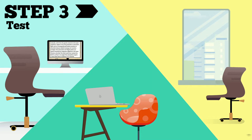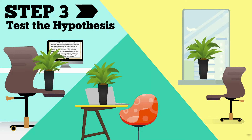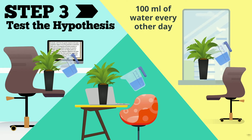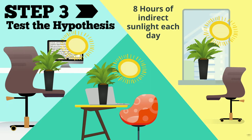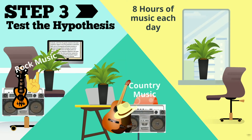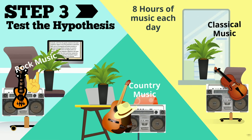Step three: test the hypothesis. Have the same type and size of plant. Give them a hundred milliliters of water every other day. Give the plants eight hours of indirect sunlight each day, and give the plants eight hours of music each day. Some will have rock music, some will have country music, and some will have classical music.